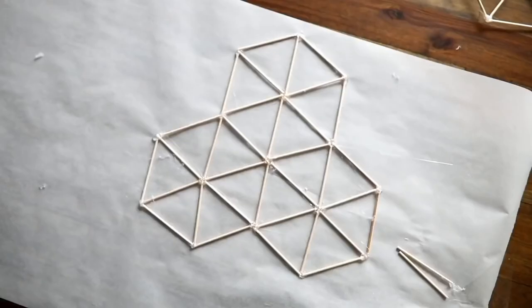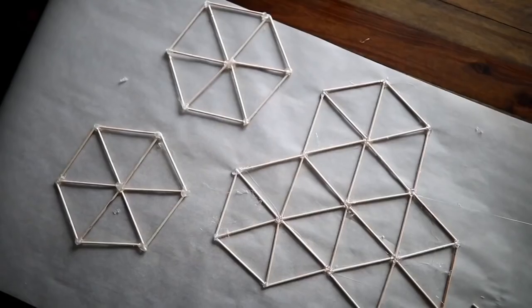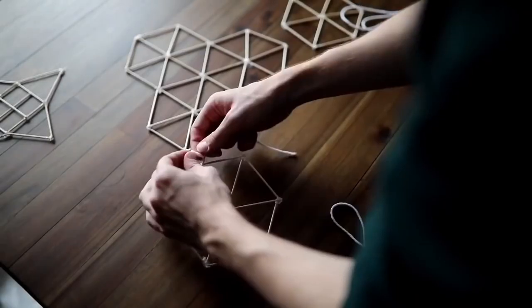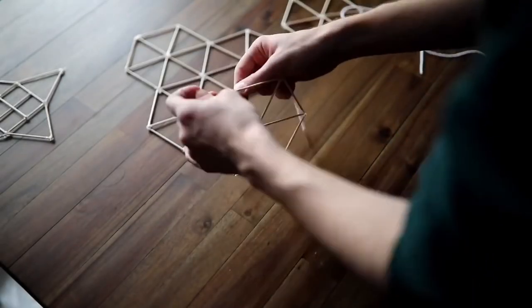I also use the tip of my hot glue gun to kind of melt down any excess hot glue sections. So I created these three almost pinwheel style shapes and I attached them together using a little bit of yarn.